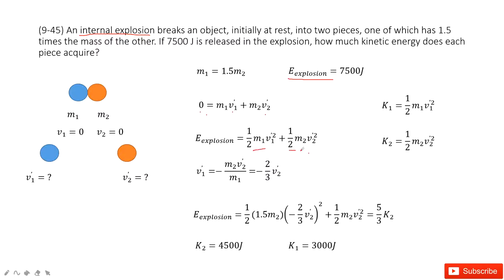From this equation, we can find the relationship between v1 and v2. The ratio of m1 to m2 is 1.5.